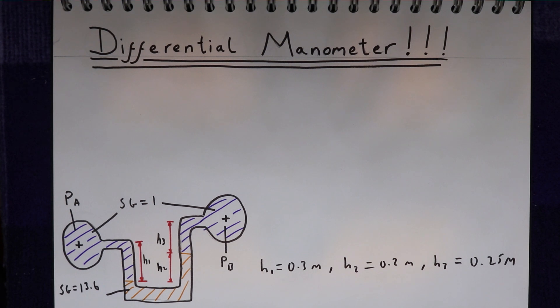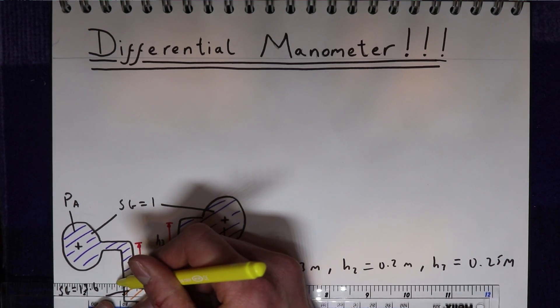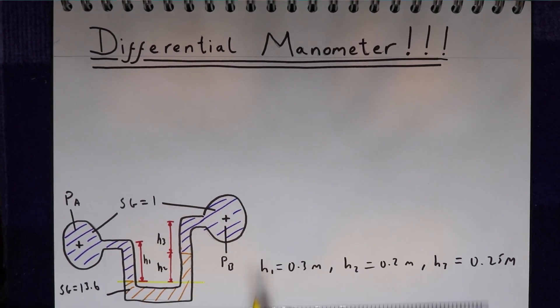So to start with, what we have to do is find the point in the U-tube where we have the same fluid on both sides. OK, so if we draw a line here, we can see that we've got mercury on both sides. So everywhere below this line has mercury in it.